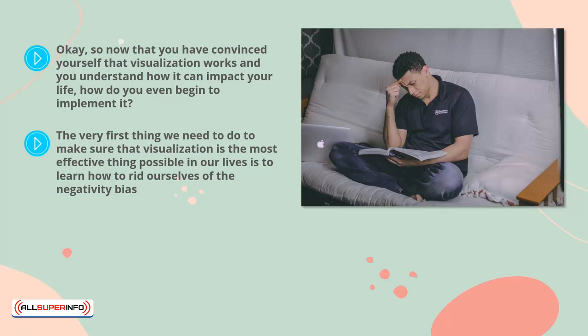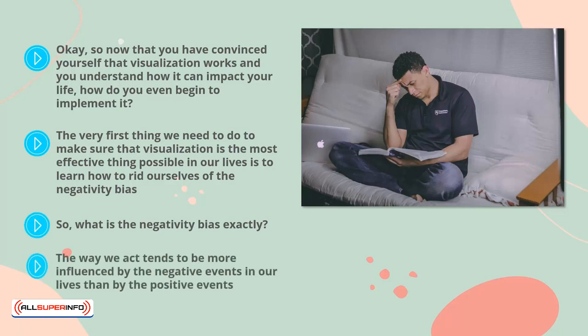The negativity bias is something that has harmed us probably our whole lives and throughout all of human history. What is the negativity bias exactly? The negativity bias is a psychological state that can prioritize negative thoughts and feelings over positive ones. For example, if we experience painful or traumatizing events, those tend to impact us more than things that aren't as extreme or even positive. The way we act tends to be more influenced by the negative events in our lives than by the positive events.